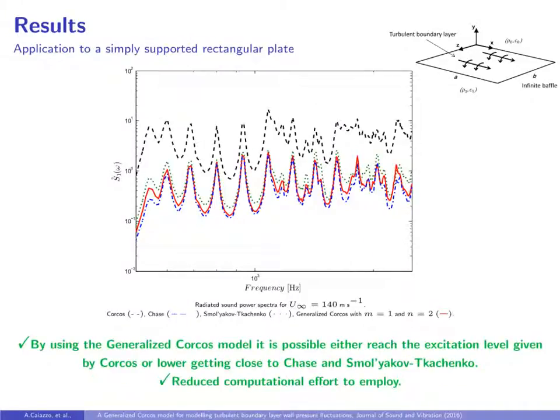The application case is here given by a simply supported rectangular plate inserted in a flat, infinite, rigid baffle and driven on one side by a stationary TBL with zero mean pressure gradient. The power radiated by the plate is dominated by the resonant modes, and its levels are directly related to the low wave number levels of the different models. Therefore, by using the generalized Corcos model, it's possible either to reach the excitation level given by Corcos, or lower, getting close to Chase and Smol'yakov-Tkachenko.